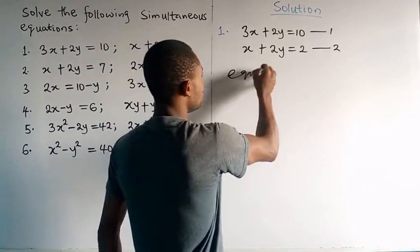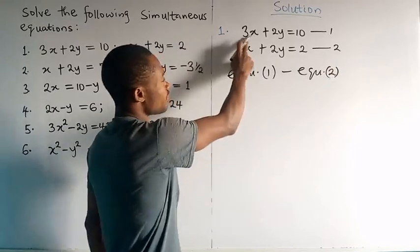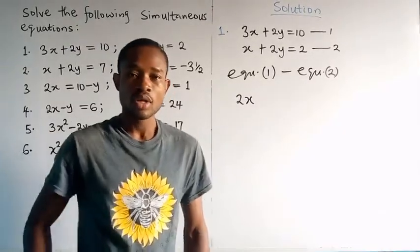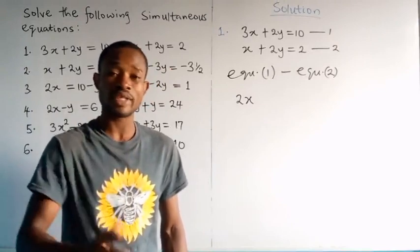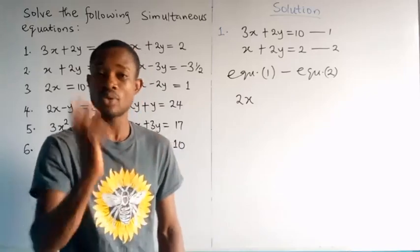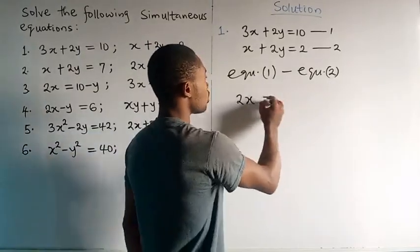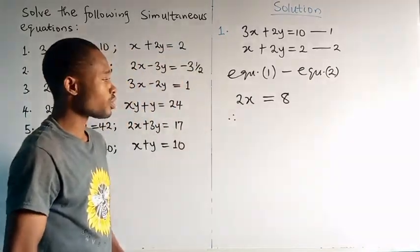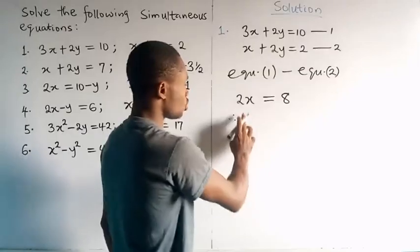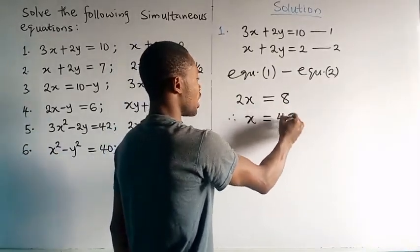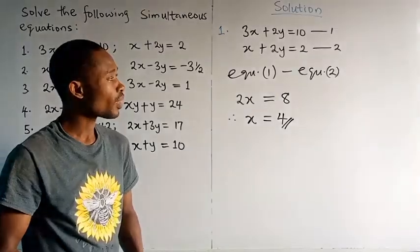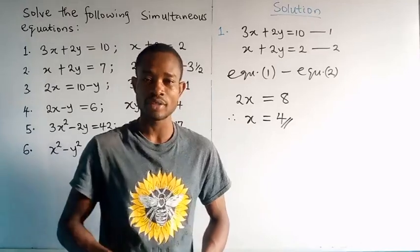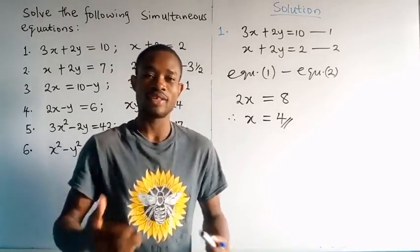Doing equation 1 minus equation 2: 3x minus x gives 2x; 2y minus 2y goes to 0, which is expected since we are eliminating y; 10 minus 2 gives 8. So we have 2x = 8. Divide both sides by 2 — the coefficient of x — and we get x = 4. Now that I have the value of x, I use it to get the value of y, which is a form of substitution.